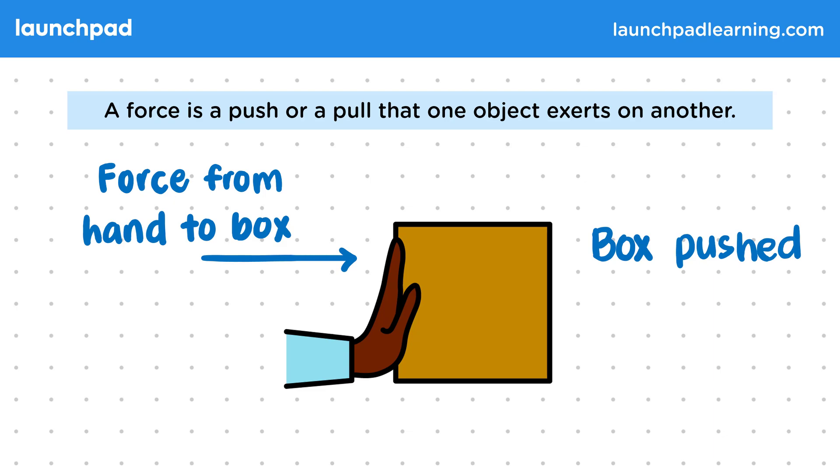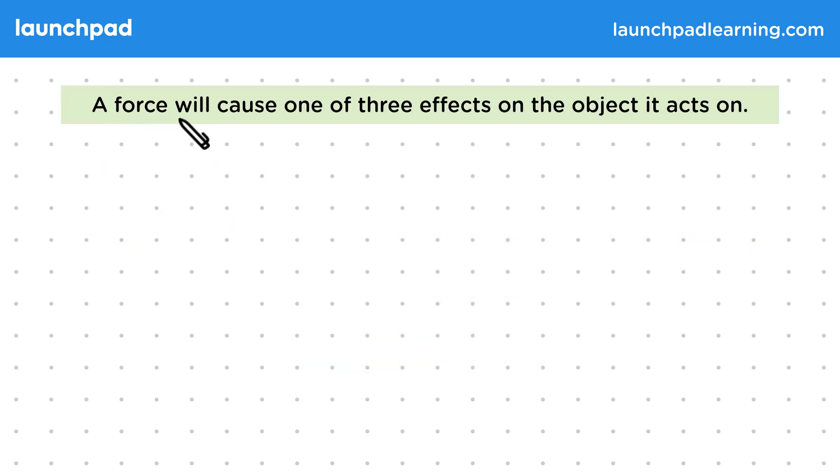So what possible effects can a force have on an object? Well, a force will cause one of three effects on the object it acts on. But the force has to be unbalanced for these effects to occur, and this is covered in another part of the course.